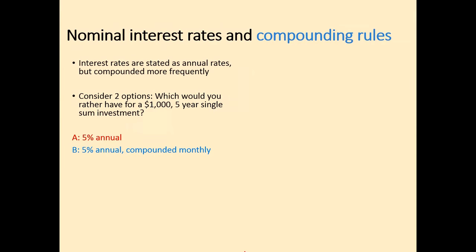Now let's address compounding frequency. So far everything has been annual compounding, but compounding frequency matters. Interest rates are quoted as annual rates — you're familiar with APR, annual percentage rate — but they're often compounded more frequently, usually monthly. Consider a $1,000 single sum investment for five years: Option A pays 5% compounded annually; Option B pays 5% compounded monthly. Which would you choose?